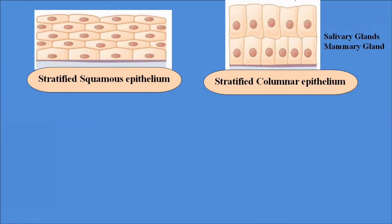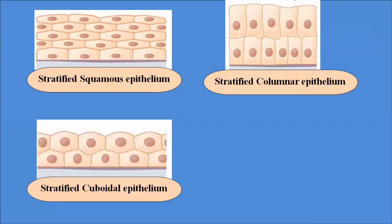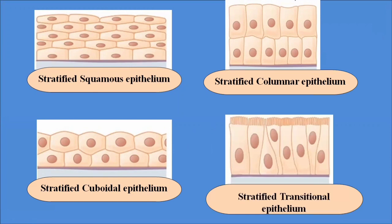Stratified cuboidal epithelium consists of multiple layers of cube-shaped cells. These provide the lining to the main urethra and some other glands of the body, also providing protection to these glands.